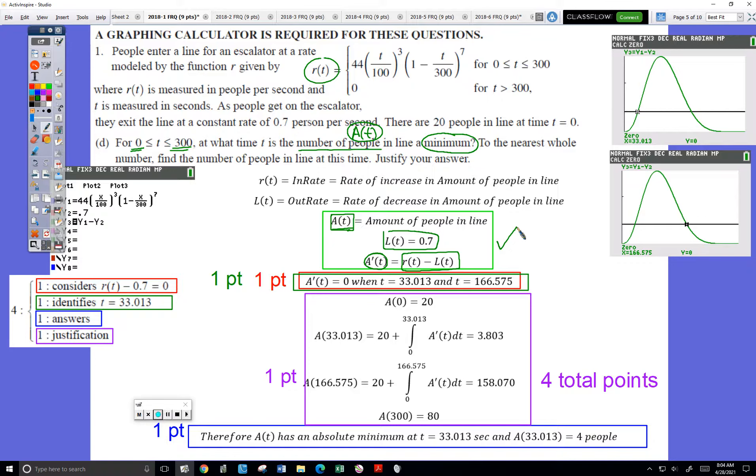So then I have the item that always gets me at least one point. In this case, it earned me two points. A prime of T has a value of zero at these two times. That's able to be found on my calculator, because right here,